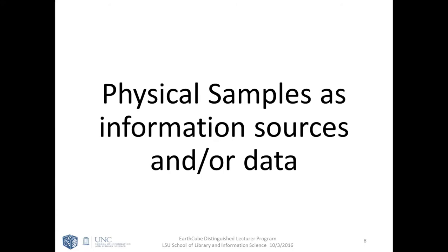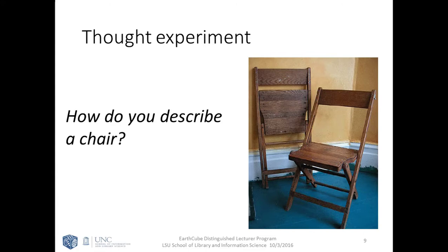Now we transition to the concept of physical samples as information sources. As a thought experiment: how would you describe a chair? If you were to ask someone to go get a chair, you might need more information — is it a folding chair, a specific color, does it have wheels? What details do you need to communicate so they know which chair you want? There's a lot of information we take for granted, especially when it's something as simple as an object.